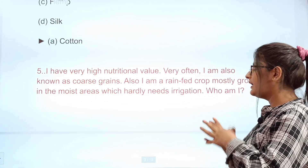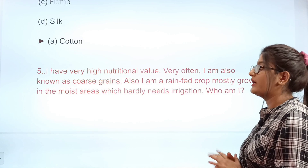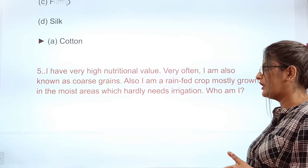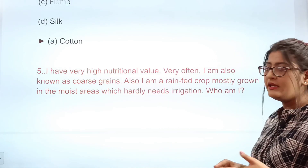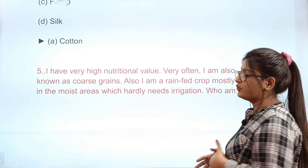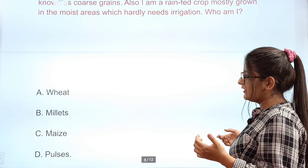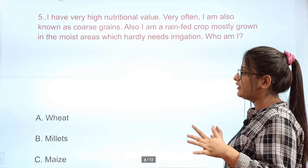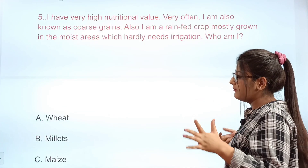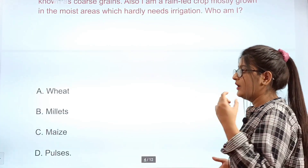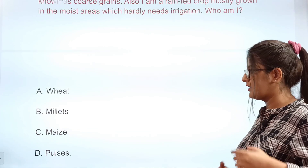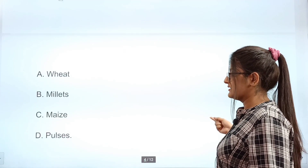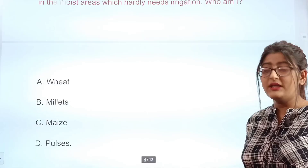Question 5 is a 'Who am I?' riddle: I have very high nutritional value, I am often known as coarse grain, I am a rain-fed crop mostly grown in moist areas and hardly need any irrigation. Who am I? Options: A wheat, B millets, C maize, D pulses. The correct answer is B — millets.